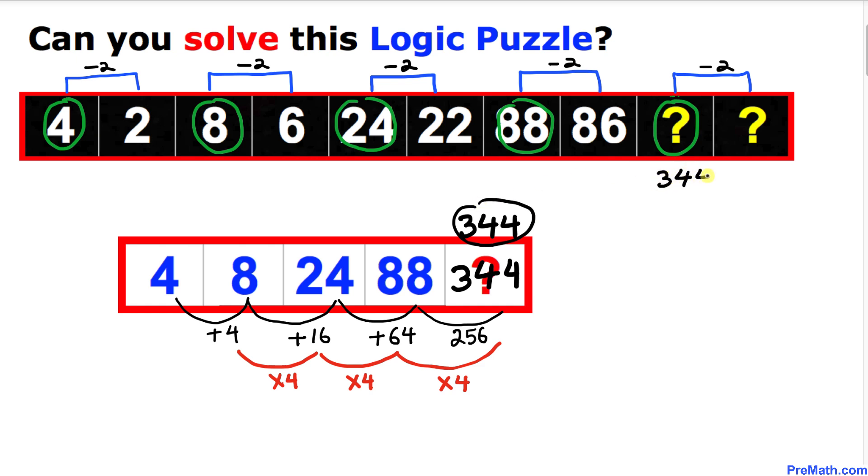And we know that the next number is going to be 2 less. So that's going to be 344 minus 2, which means this number is going to be 342.